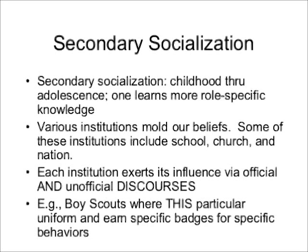Sometimes there will be competing discourses that try to push and pull the child in different directions. An example of an institution that teaches children really complex roles would be the Boy Scouts of America. In the Boy Scouts, boys have to wear a particular uniform and earn specific badges for specific behaviors. All of these behaviors are meant to symbolize the correct way to perform masculinity — earning a badge for tying knots, whittling wood, or camping, all very masculine activities meant to socialize the young boy into being a man.